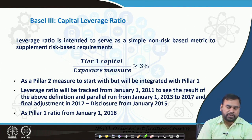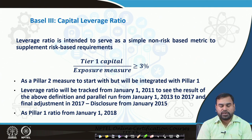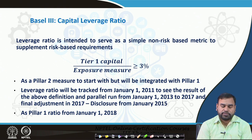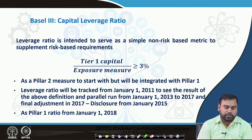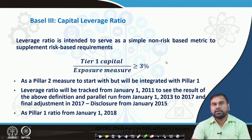They have also started the concept of a capital leverage ratio. Here, tier 1 capital divided by the risk exposure limit should be greater than or equal to 3 percent. As a pillar 2 measure to start, the leverage ratio will be tracked from January 2011, with a parallel run from January 1, 2013 to 2017, final adjustment in 2017, disclosure from January 2015, and as a pillar 1 ratio from January 1, 2018 — these are the different deadlines given by the regulatory body to commercial banks to implement Basel 3.